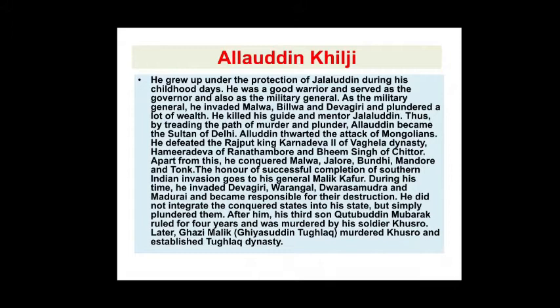Alauddin repelled Mongol attacks and defeated the Rajput kings — Karanadeva II of the Vaghela dynasty, Hamirdeva of Ranthambore, and Bhima Singh of Chittor. He successfully won many wars. During this time, he also invaded Devagiri, Warangal, Dwarasamudra, and Madurai, becoming responsible for their conquest. However, he did not integrate the conquered states into his empire but simply plundered their wealth.